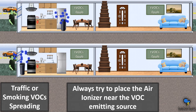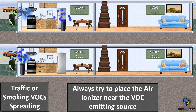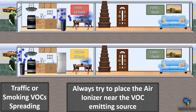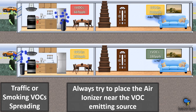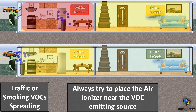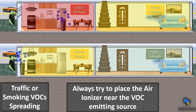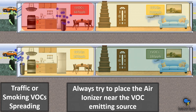Traffic or smoking VOC spreading. It's always important to place an air ionizer near the VOC-emitting source, because when you place it away from the source, it takes much longer to ionize the VOCs. Gas molecules spread quickly — it's always important to leave your ionizer near the VOC-emitting source.